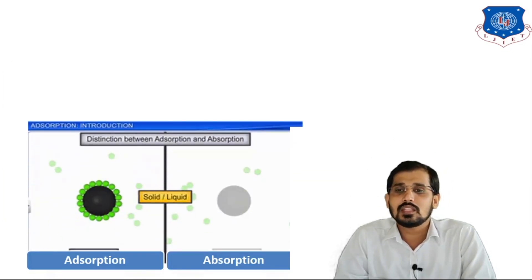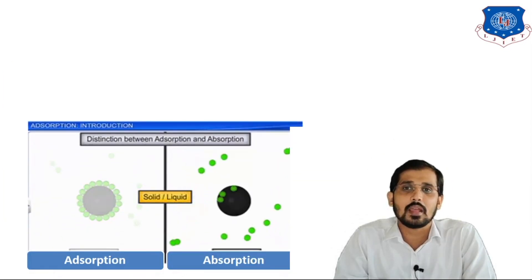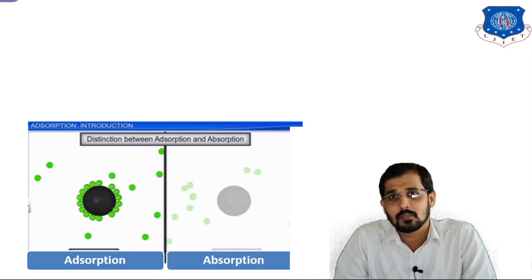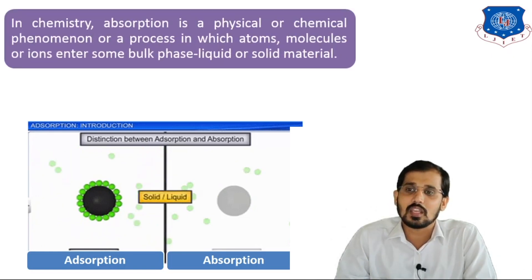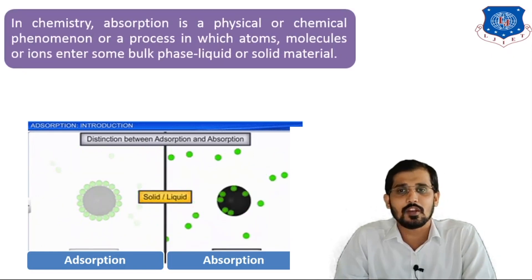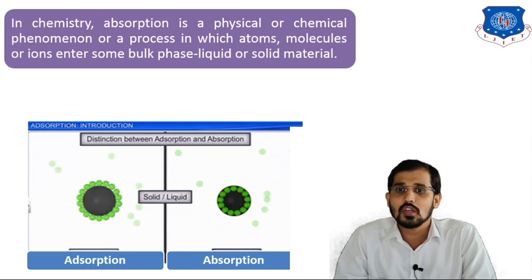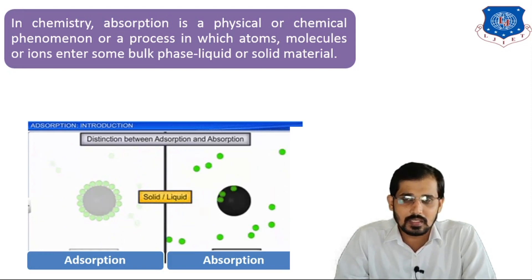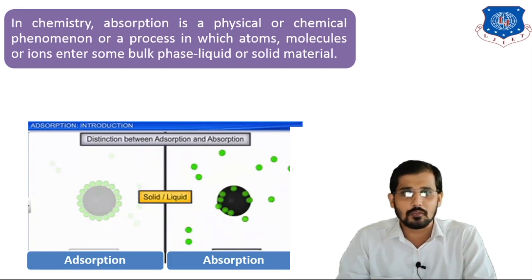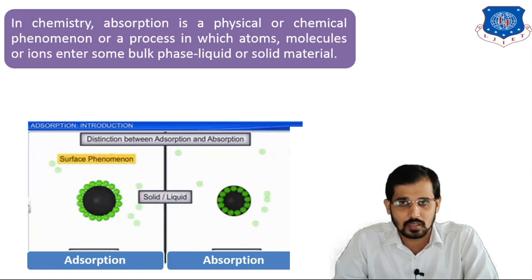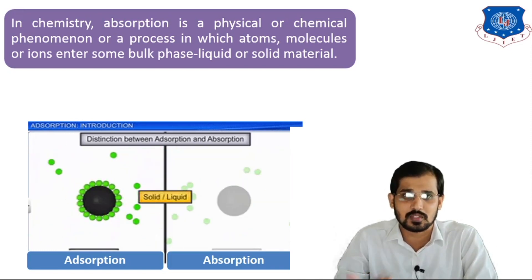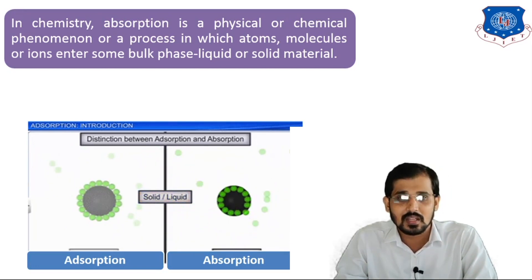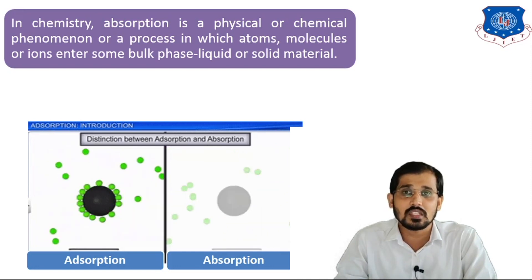You can see on the screen a figure for adsorption and absorption. On the right-hand side is absorption; on the left-hand side is adsorption. In chemistry, absorption is a physical or chemical phenomenon or process in which atoms, molecules, and ions enter into the bulk phase of a material. Gas absorption is a bulk phenomenon in which one substance from a mixture penetrates into the bulk of another substance.